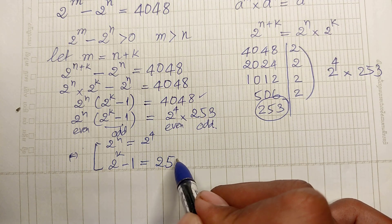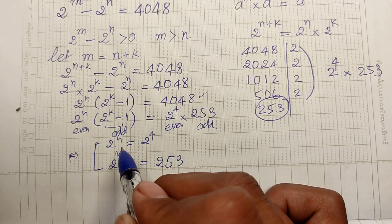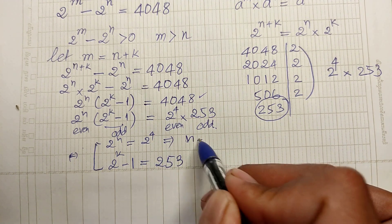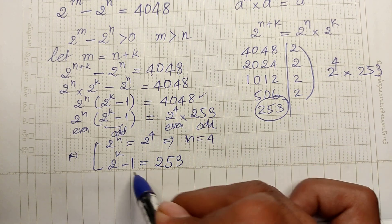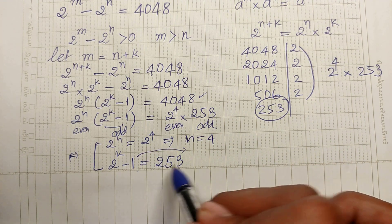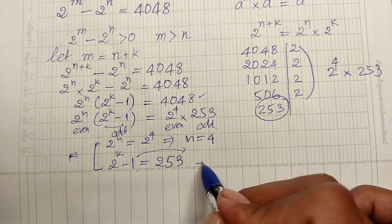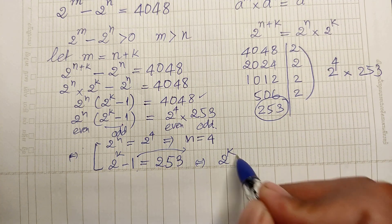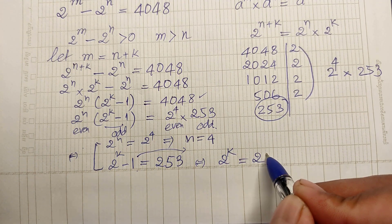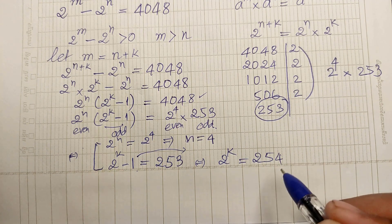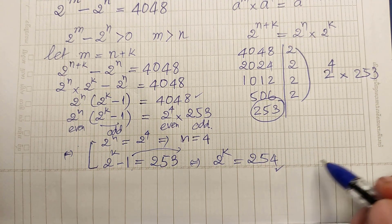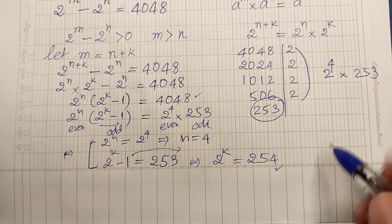From 2 power n equals 2 power 4, we get n equals 4. Moving the 1 from the left side to the right side, we get 2 power k equals 254.